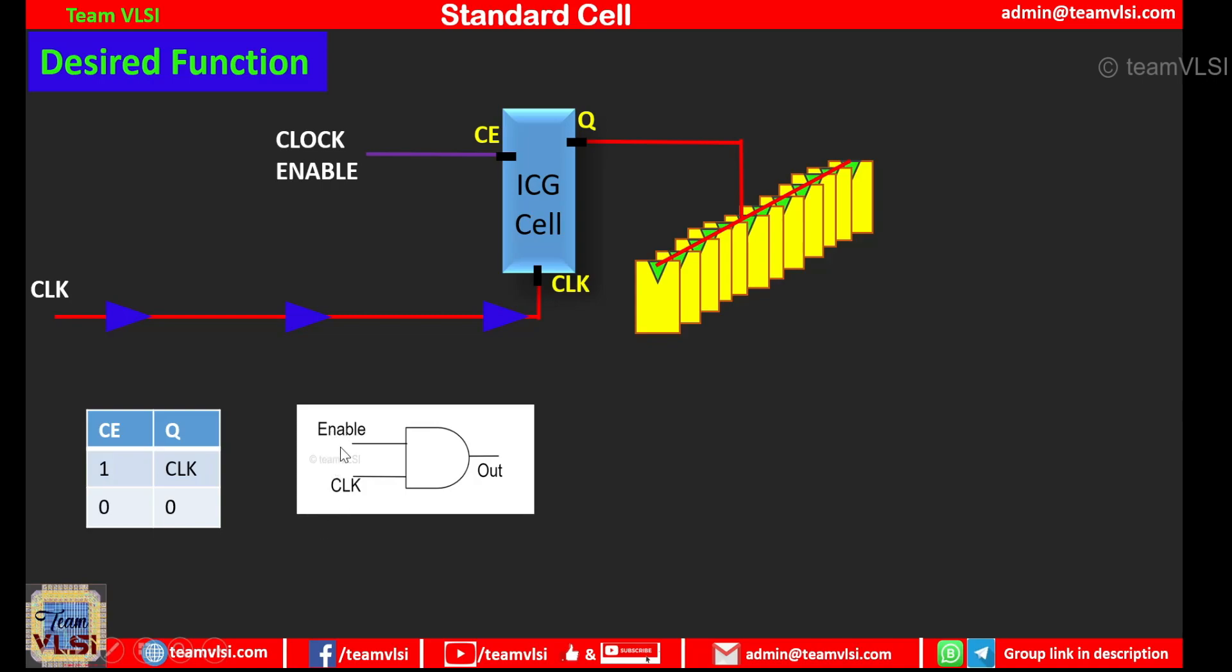So if we apply the enable and clock signal at the input of an AND gate it will give the same output, that means when enable is high it will allow to pass the clock signals to the output and when enable is low it will stop the clock signal. Right. Yes it is right. But using this AND gate as a clock gater here we have some problem. I will demonstrate it.